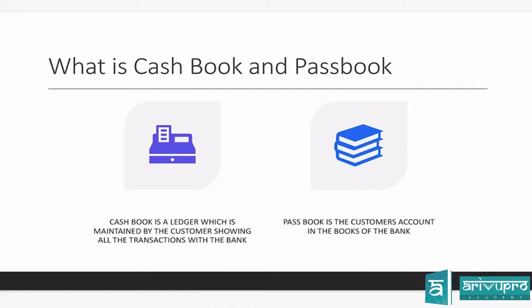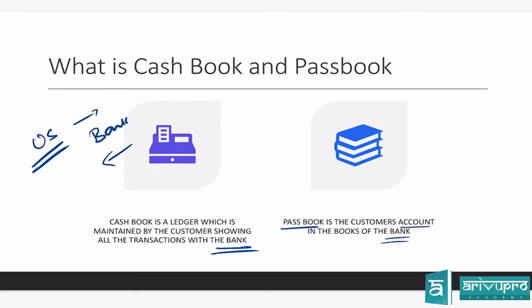First, what is a cash book and a passbook? A cash book is a book prepared by the accountant which shows all transactions with the bank. A passbook is the customer's account in the books of the bank. The cash book is maintained by us, showing all transactions with the bank. The passbook is maintained by the bank, showing all transactions the bank has done with us.